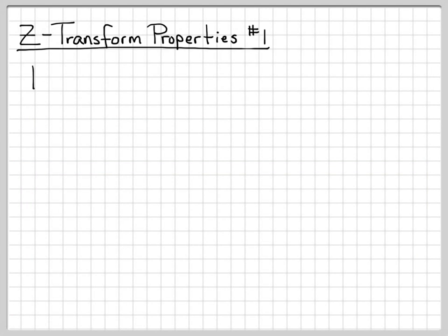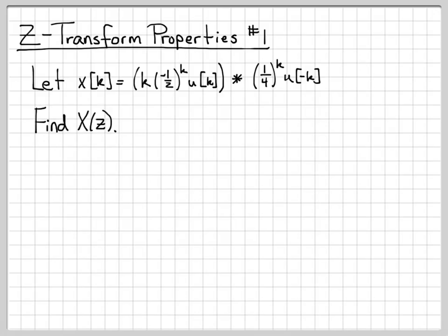So the problem we're going to work here is the following. We're going to work with the discrete time signal x of k, which consists of two pieces. This first part is k times minus 1 half to the k, u of k, and that is actually convolved with the second part, which is one-fourth to the k, u of minus k. So this is the discrete time signal, and we would like to find x of Z, the Z-transform of this signal, and along with it the region of convergence.